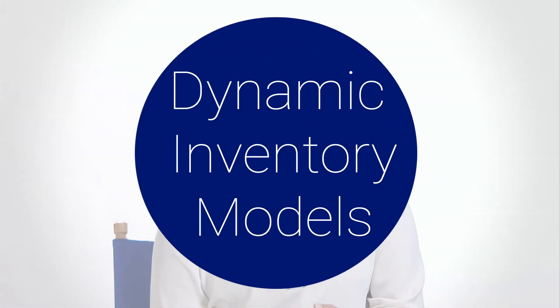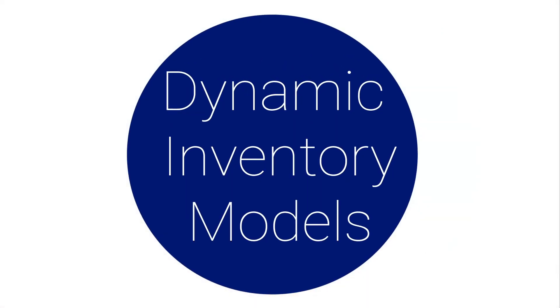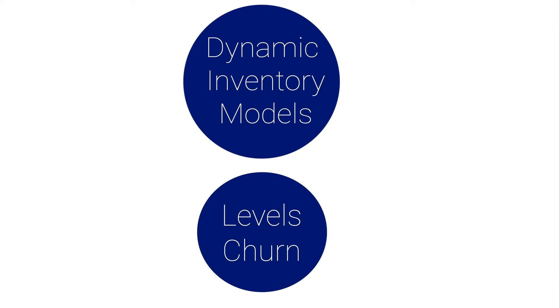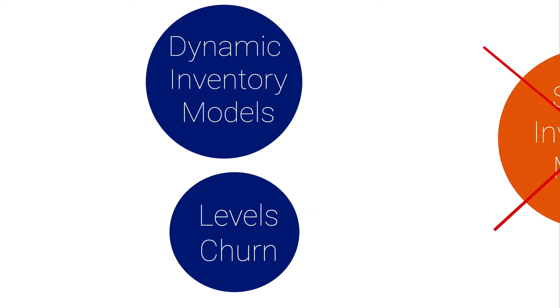We use empirical demand generators or randomized demand history so we can predict or assess how levels will interact based upon different demand histories. We use dynamic inventory models where you're updating your inventory policy and positions frequently, and that lets you capture effects like levels churn that you would totally miss if you were using just a static inventory model.